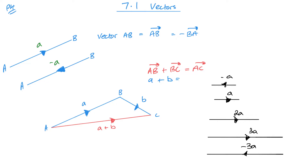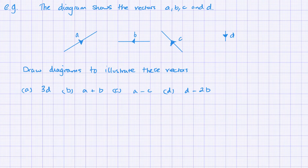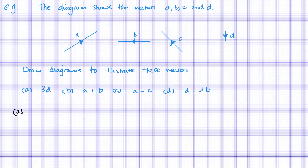Let's get stuck into a few questions — as we start doing questions, hopefully more and more will make sense. So let's start with some straightforward vectors. We're given four different types of vectors and we need to illustrate these. So 3D is going to be three lots of vector D. If I look at vector D, it's just one square straight down, so three lots of that gives me three squares straight down.